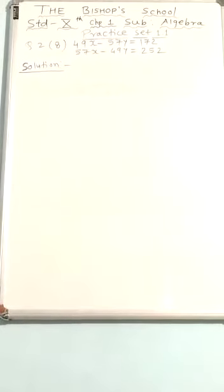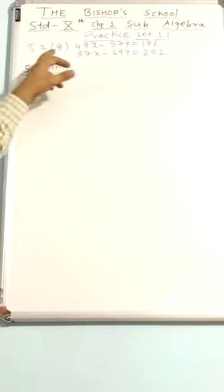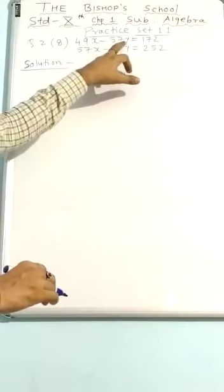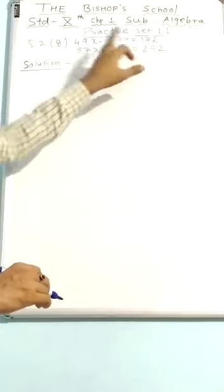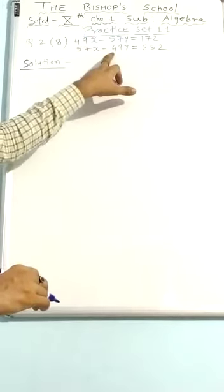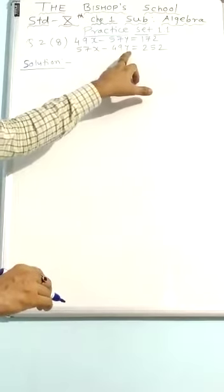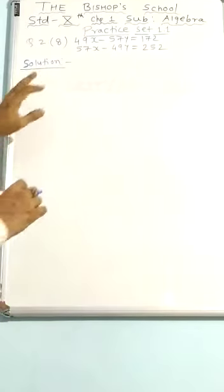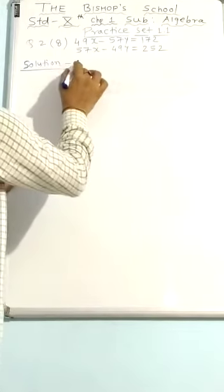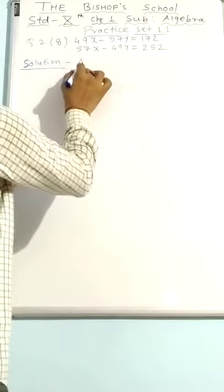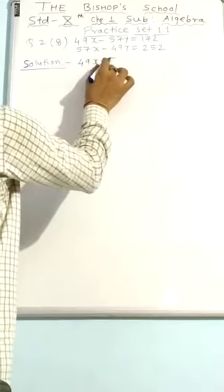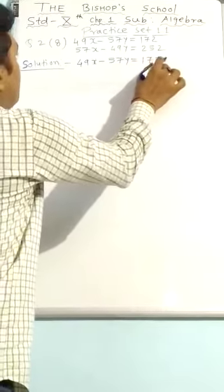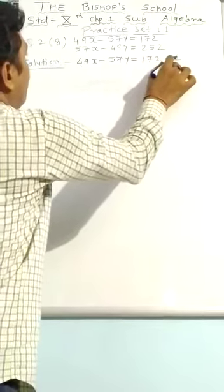Next question is question number 2, the eighth one. The equations are: 49x minus 57y equal to 172, and 57x minus 49y equal to 252. I am writing these two equations first. 49x minus 57y equal to 172 — that is my first equation.